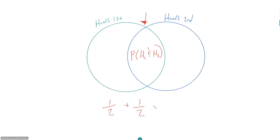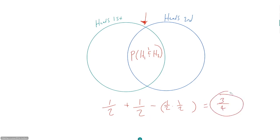Because we counted the overlap twice but only want it once, we have to subtract it out once. So the correct calculation is: one half plus one half minus the probability of getting heads on both, which is one half times one half, equaling one fourth. That gives us one half plus one half minus one fourth, which is three fourths — a 75% chance. That makes much more sense.